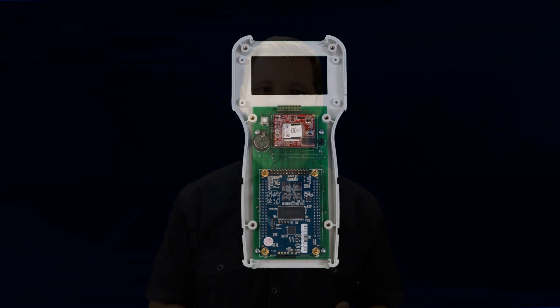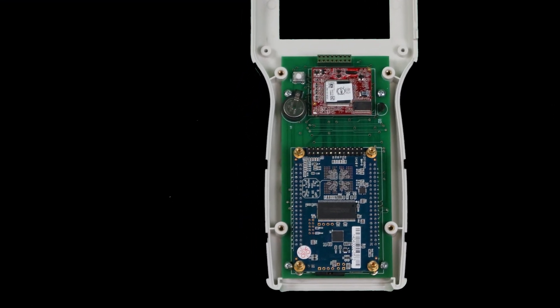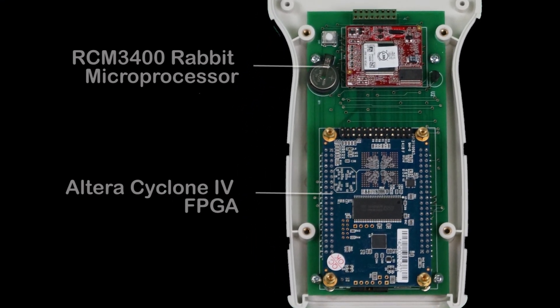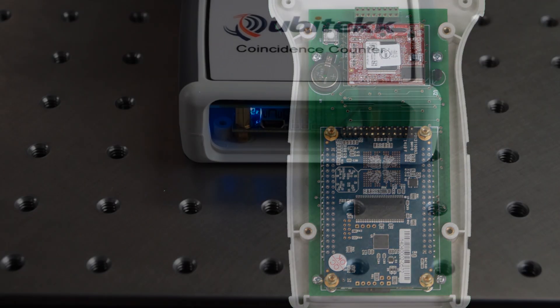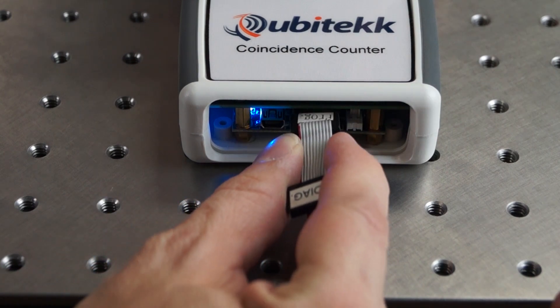The product ships pre-programmed with the features described in this video, but if you look inside the device you'll find that there's a field programmable gate array — or an FPGA — and there's a microprocessor. The microprocessor controls the user interface and serial communications. The FPGA controls the high-speed coincidence counting. Both of these devices can be reprogrammed to make the device function in a completely different way. The schematics for the boards, the chip pinouts, the FPGA and microprocessor source code — all that stuff is included with the device or can be downloaded from Qubitekk's website.